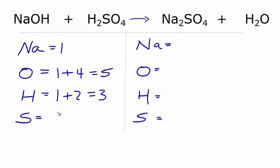On the product side, we have two Na's, we have oxygens, we have four plus the one for a total of five oxygen atoms. Hydrogens, we have the two, and sulfurs, we have one.